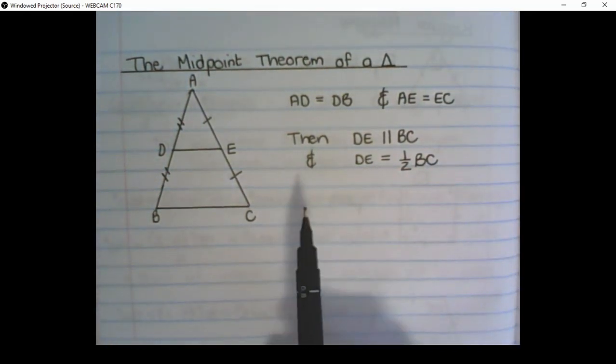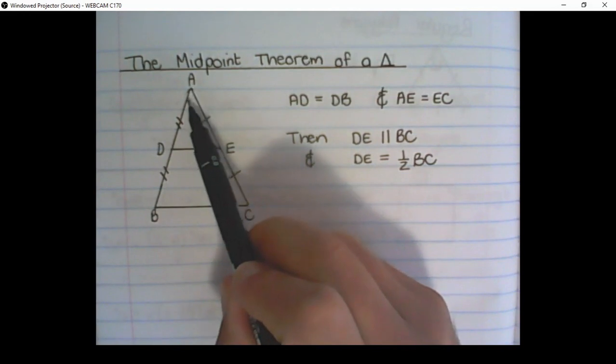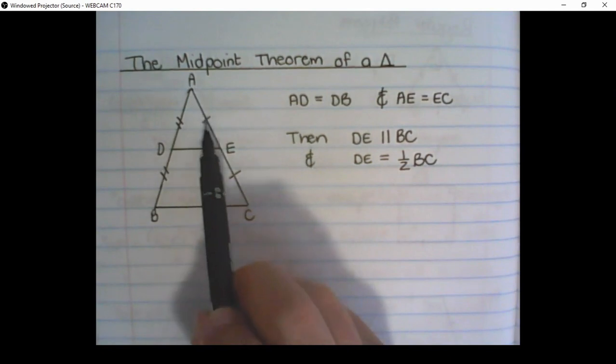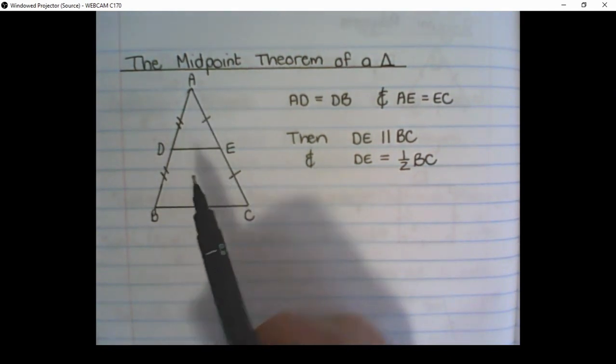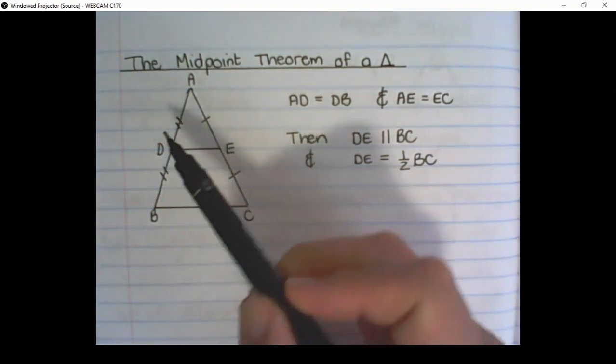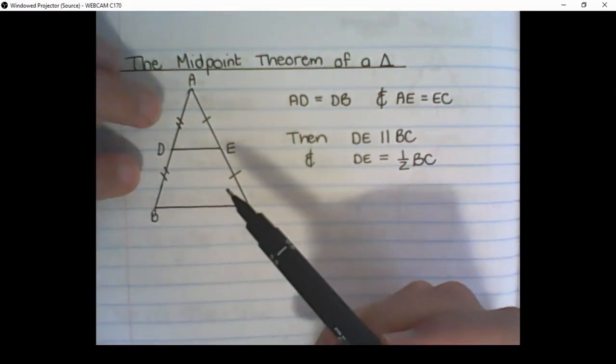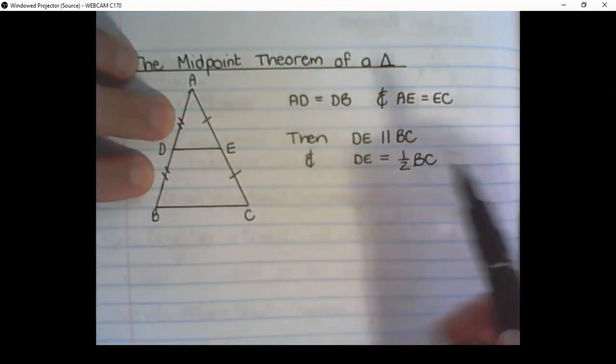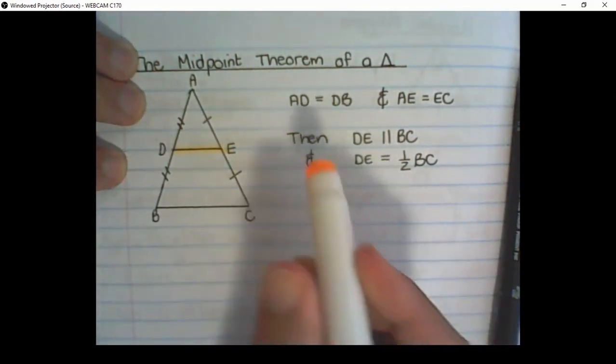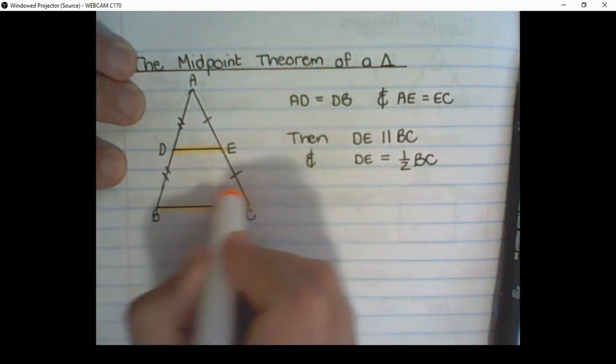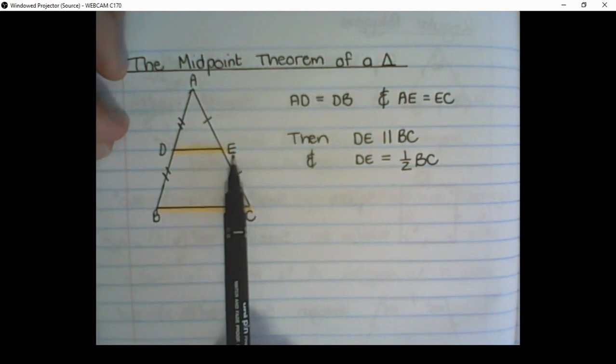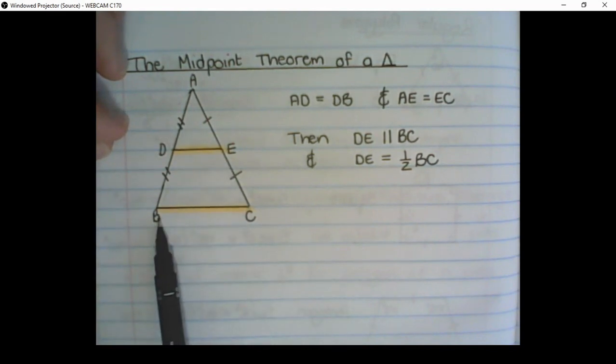So the midpoint theorem is quite simple. What you are looking for is one side of the triangle to be bisected, and another side to be bisected, so it is cut into halves. Then, because these two lines are equal and those two lines are equal, the line DE is parallel to the line BC. Also, the length of the line DE is half of the length of the line BC.